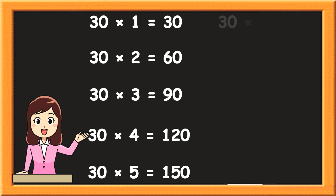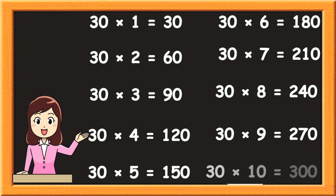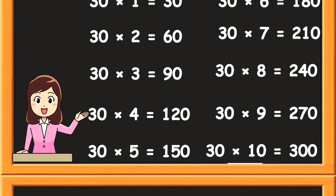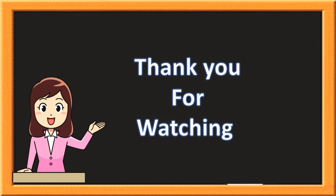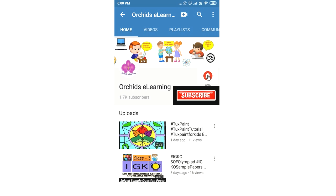30 6s are 180. 30 7s are 210. 30 8s are 240. 30 9s are 270. 30 10s are 300.